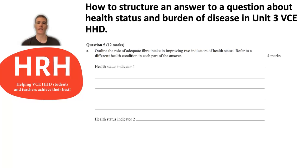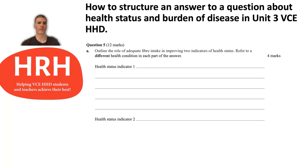The question is also mentioning indicators of health status. Where you see 'health status' in a question, it's really signposting you to refer to things such as life expectancy, mortality, incidence, prevalence — those kinds of things in your answer. You can also refer to burden of disease, because that is also an example of a health status indicator. This question specifically asks you to refer to a different health condition in each part of your answer, so you must include two health conditions.